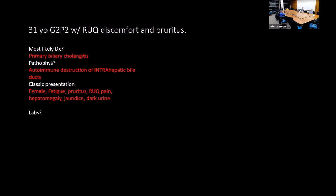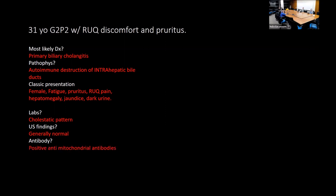Labs for PBC show a cholestatic pattern: elevated ALP greater than AST/ALT. Ultrasound findings are usually normal. The key antibody is anti-mitochondrial antibody (AMA). Treatment is ursodeoxycholic acid (ursodiol), which is the mainstay.